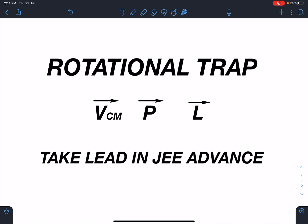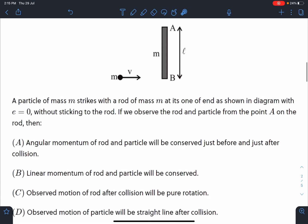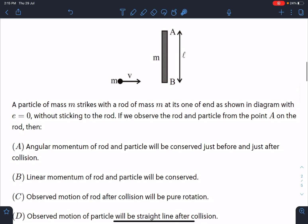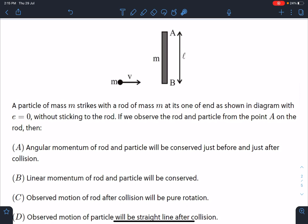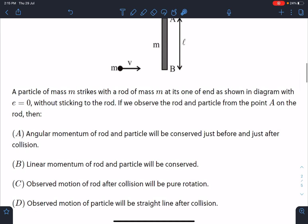It's a quite tricky problem, so let's discuss it. Here is the problem statement: a particle of mass m strikes with a rod of mass m at one of its end as shown in the diagram with e equal to zero, so it's an elastic collision. One thing is given: without sticking to the rod. If you observe the rod and particle from point A on the rod, point A is the topmost point here you can see.